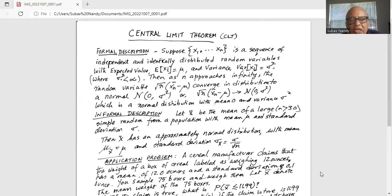Or square root of n times (xn bar minus mu) approaches normal distribution with mean of zero and variance of sigma squared.